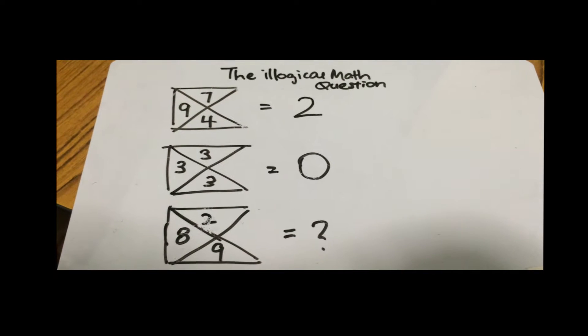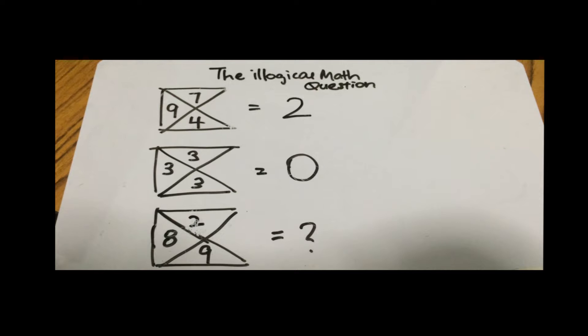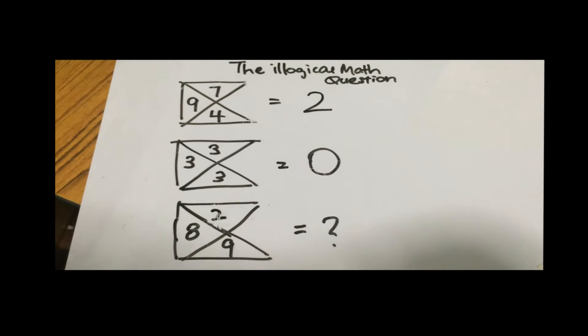So basically what the illogical math question is, is that I have three numbers and this is equivalent to a number.